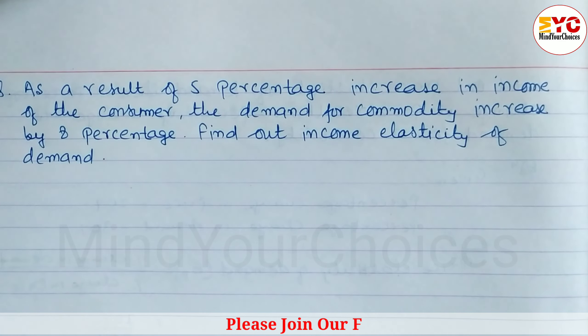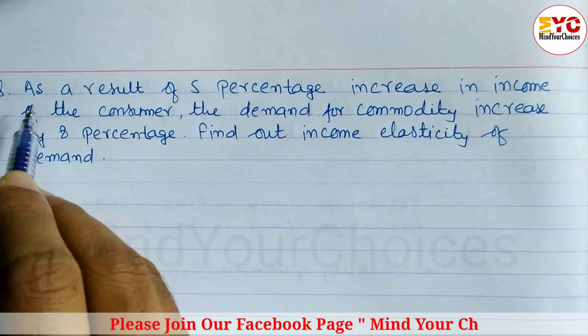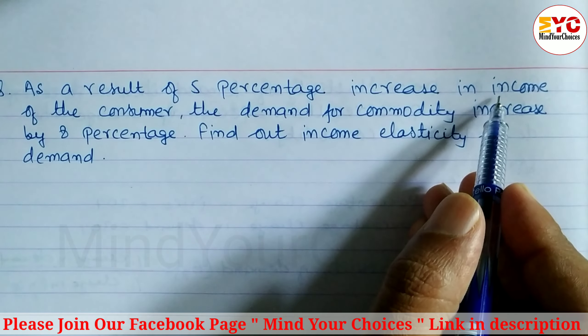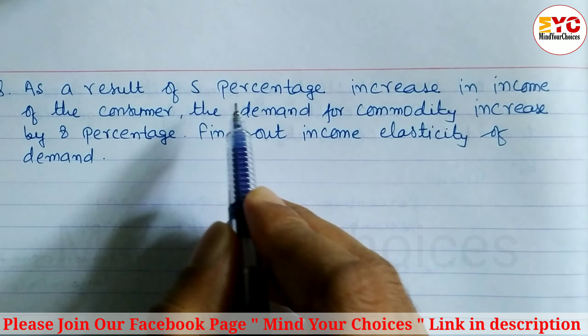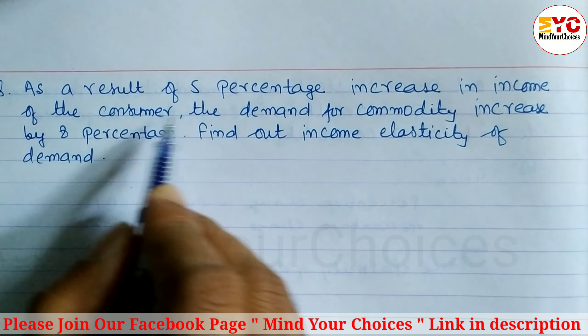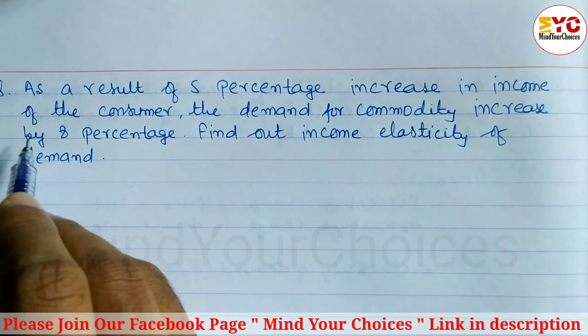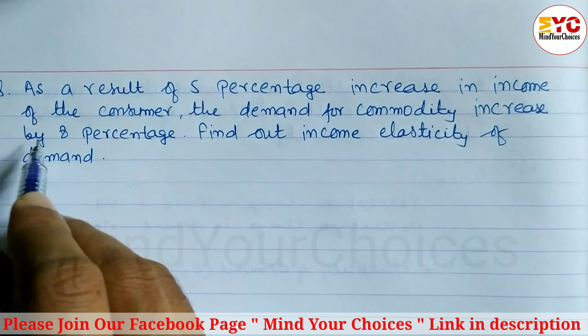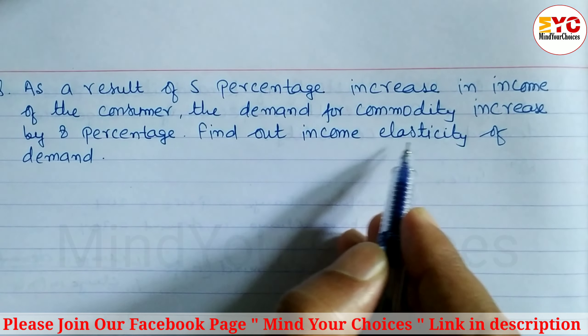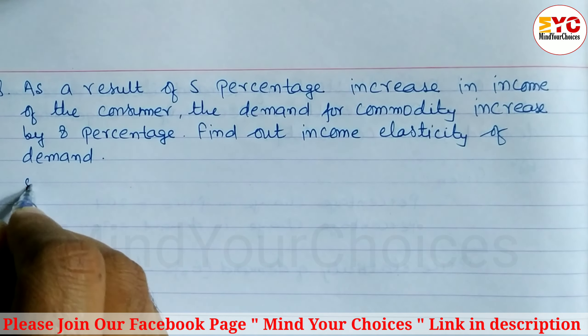This question is taken from elasticity of demand and supply. As a result of a five percent increase in income, the demand for a commodity increases by eight percent. When income of the consumer increases, demand of the commodity also rises by eight percent. Find out the income elasticity of demand.